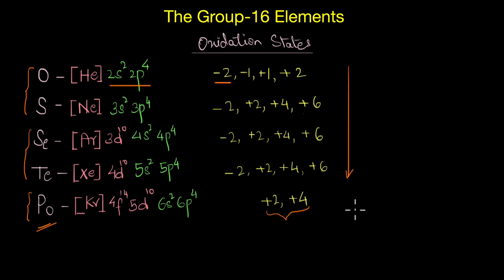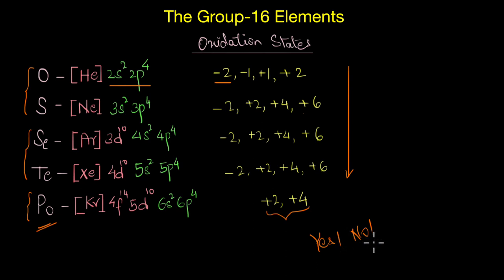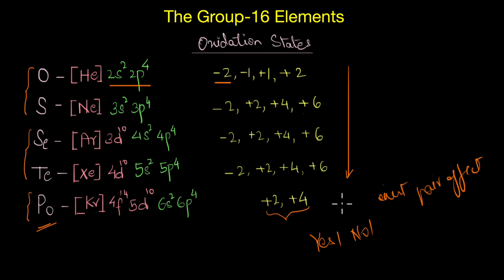But why does polonium not show +6 oxidation state either? It should be able to give up electrons easily. Well, theoretically yes — but practically no. As we've discussed numerous times, in the heavier p-block elements the s electrons generally prefer to remain paired: the famous inert pair effect. This extends to Group 16 as well, which is why the stability of +6 decreases down the group and +4 becomes more stable for polonium.